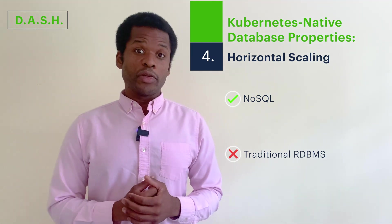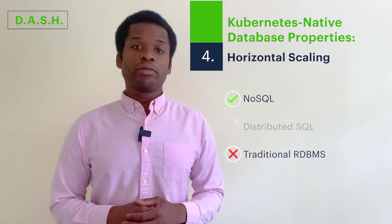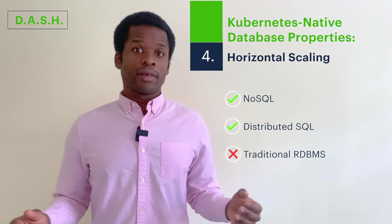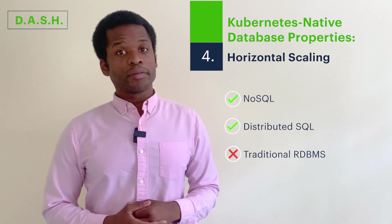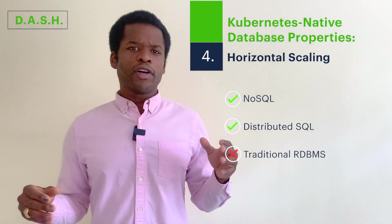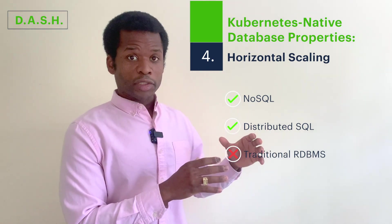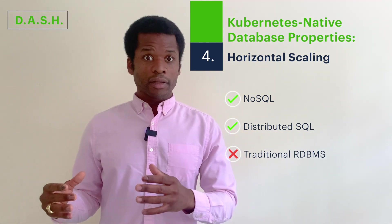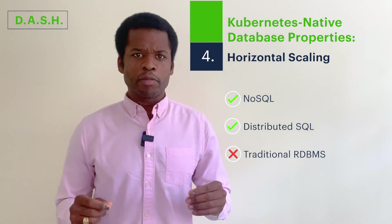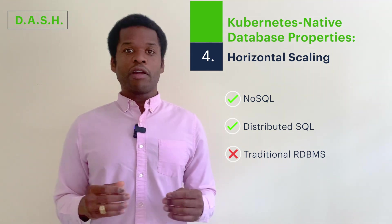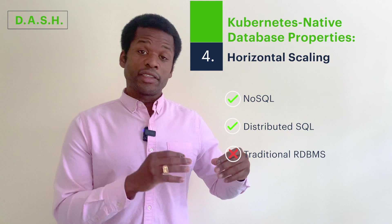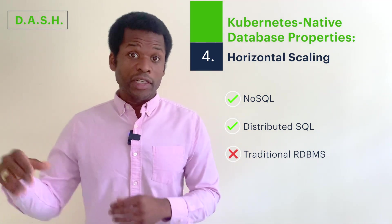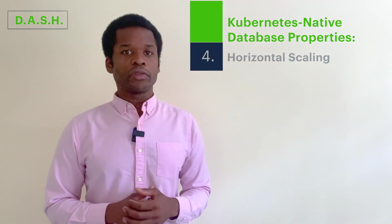NoSQL databases are well known to horizontally scale by architecture. And in the same way, distributed SQL databases horizontally scale easily and incur no downtime in the process. Combining Kubernetes service objects with horizontal scaling, one can have the impression of a single database that just got twice as powerful, with costs that scale more linearly — rather than the exponential cost growth that typically happens with vertical scaling.